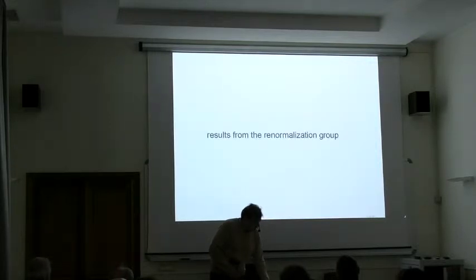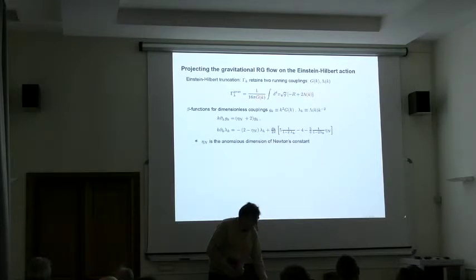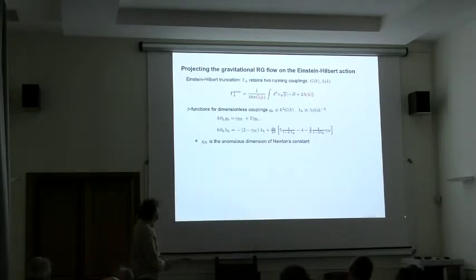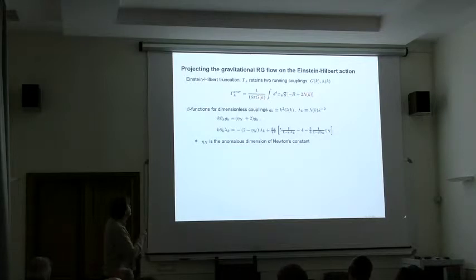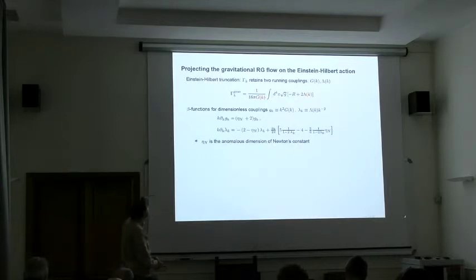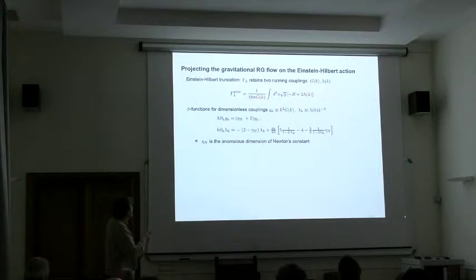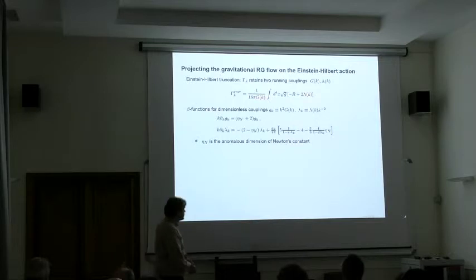Let's have a quick look at results that have been obtained. The simplest evaluation that you can do in terms of flow equations uses the Einstein-Hilbert action. You have two coupling constants, G and lambda, which can depend on the scale. You substitute this into your ansatz. You solve the corresponding equation. You project it onto the subspace. Then, you get beta functions which tell you how your coupling constants change with energy.